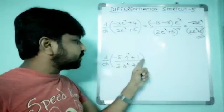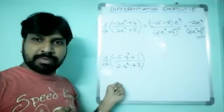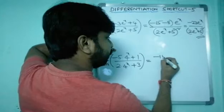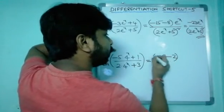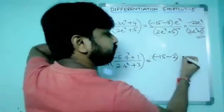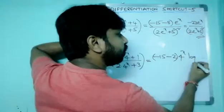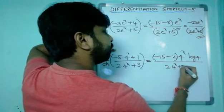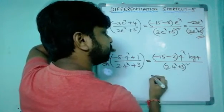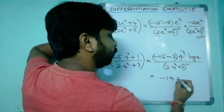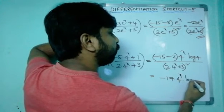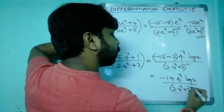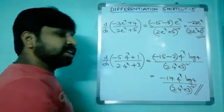Next question: d/dx of (−5·4ˣ + 1) / (2·4ˣ + 3). Using the shortcut — ad − bc = (−5)×3 − 2×1 = −15 − 2 = −17. The derivative of 4ˣ is 4ˣ·log4. So the answer is −17·4ˣ·log4 / (2·4ˣ + 3)², that's all friends.